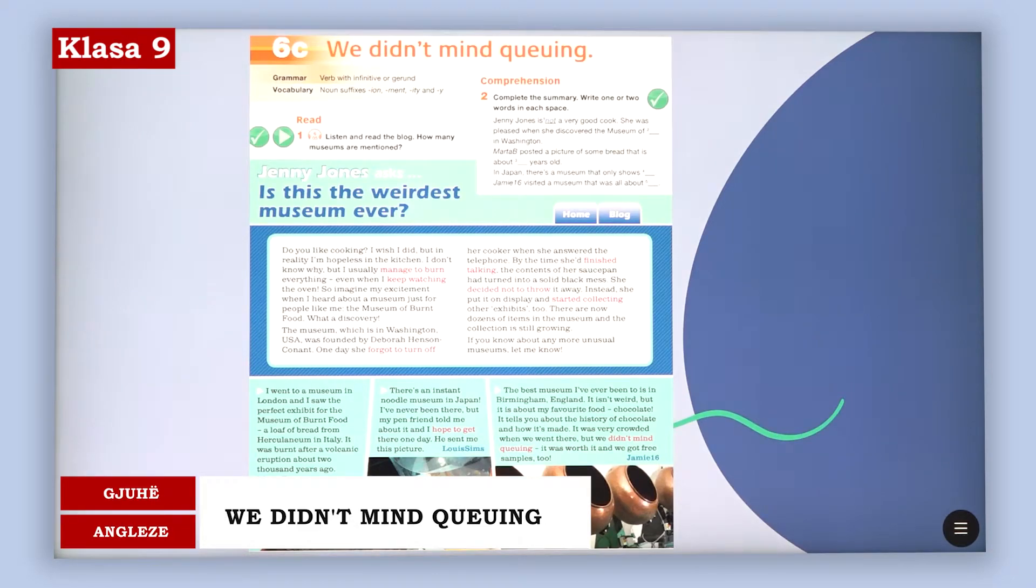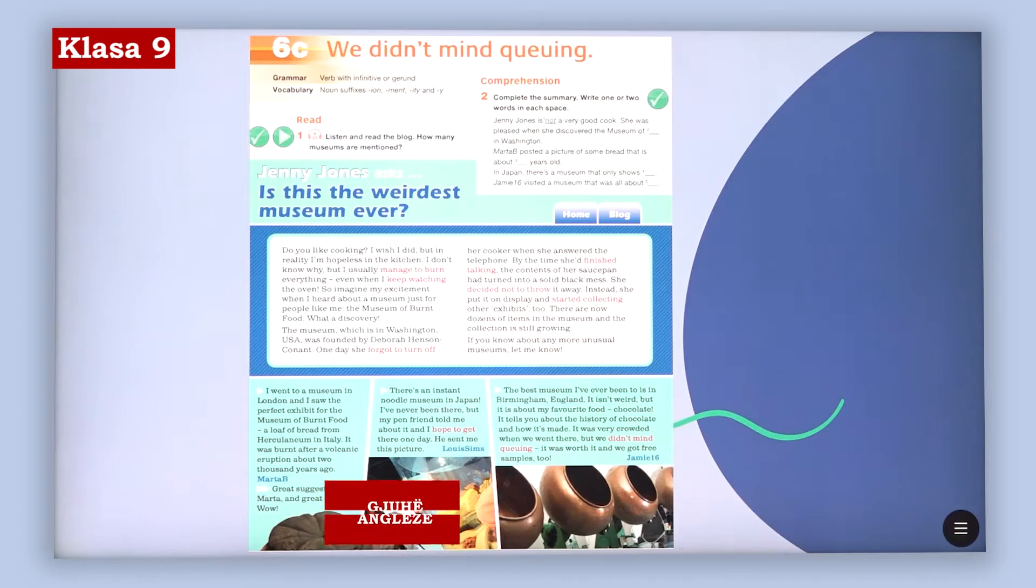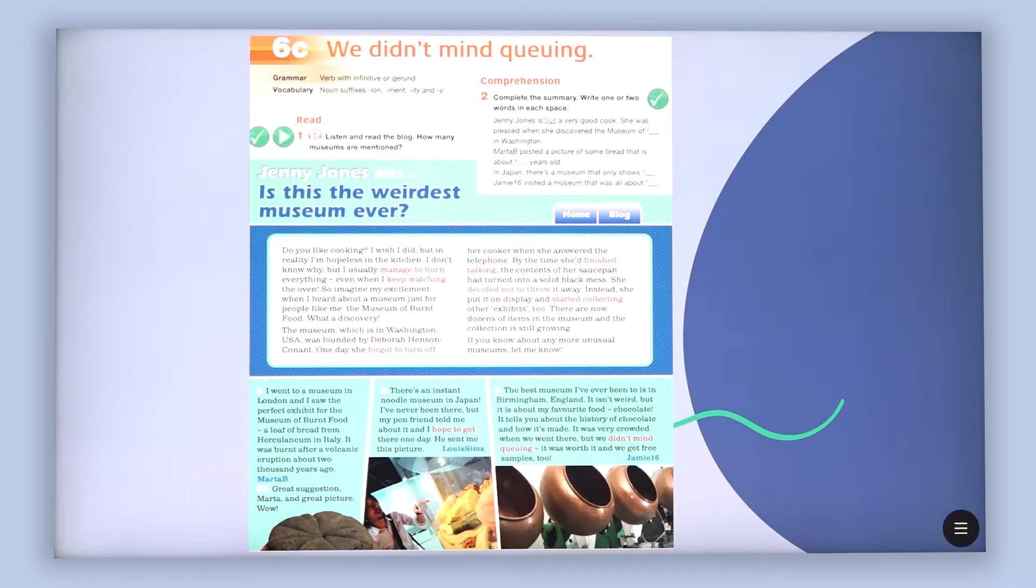Now we are going to see about a text in which we are going to talk about museums and where they are. You are going to follow the three examples that Marta, Louis and Jamie gave. Then you are going to continue with the comprehension, where you are going to complete the summary, write one or two words in each space. You are given an example. Jenny Jones is not a very good cook. And then you are going to continue with the rest.